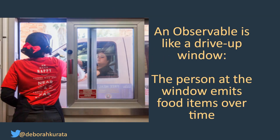You could kind of think of an observable like a drive-up window. The person at the window emits food items over time. And if you went back around and asked the person at the window, hey, what was in the bag of stuff you just gave me, they would go, I don't know — I just gave you the bag and it's up to you to deal with whatever's in there. Once I gave it to you, I have no recollection and you're gone. So you can kind of think of an observable like that.